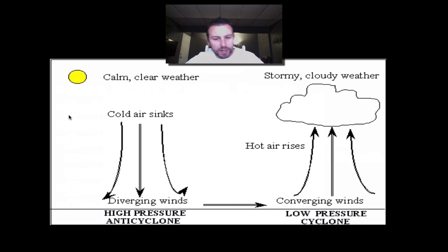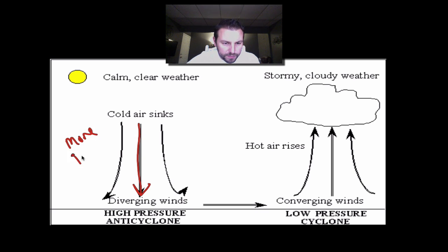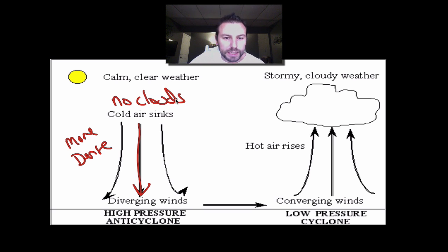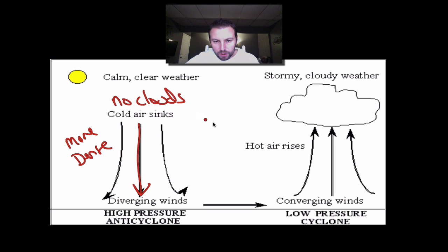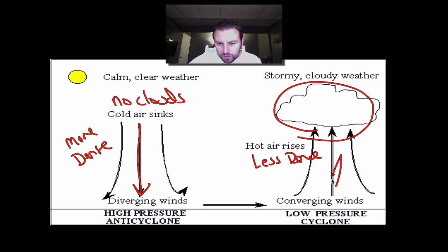Here's a side view of two different pressure systems. We have our high pressure, where we have sinking air. Notice that in high pressure, because it's more dense, we have no clouds — clouds will not form with sinking air. As air sinks, it actually heats up a little bit; remember, it's the inverse relationship between altitude and temperature. On our low pressure side, we have hot air rising because it's less dense. As it rises, it cools to the dew point and condensation occurs. So low pressure is associated with clouds because it's rising air.